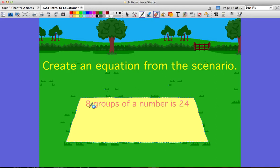I'll do one more with you. So eight groups of a number is 24. Well, groups of tells us that we're going to multiply. And I have eight groups of a number. Well, since I don't know what the number is, I know I have to use a variable. Is 24.